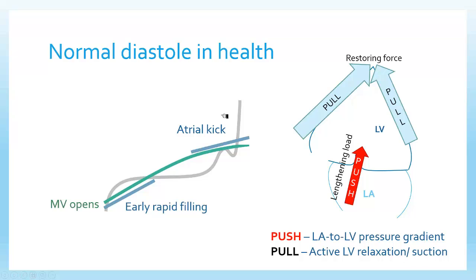This diagram is absolutely critical to understanding diastology with the echo probe. We're looking at diastole — early rapid filling and atrial kick. When we talk about how the left ventricle fills, we look at two major forces. The first is called the push function, or lengthening load, which is determined by the left atrial to left ventricular pressure gradient. Simple physics: if left atrial pressure is high, it's going to push the left ventricle open when the mitral valve opens.